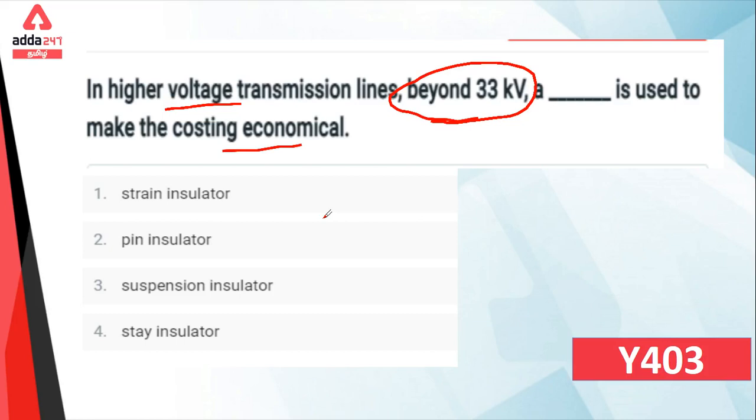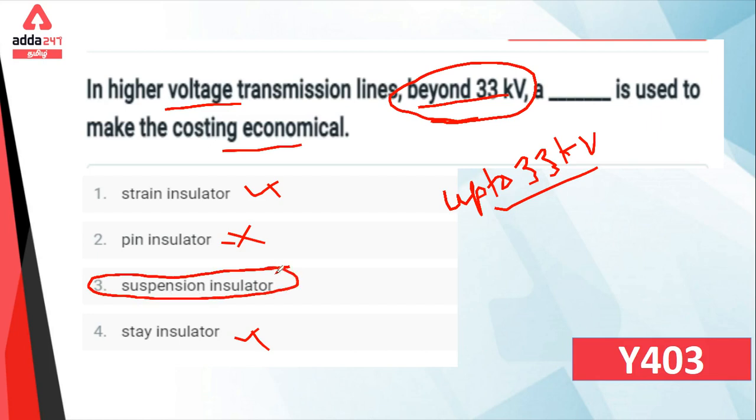For high voltage transmission lines, strain insulator and stay insulator are the same. Pin insulator is used up to 33kV. For beyond 33kV, above 33kV, we use suspension type insulator. For economic reasons, we use pin type up to 33kV, and suspension type for higher voltages. The answer is suspension type insulator.